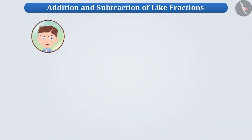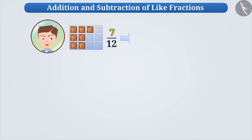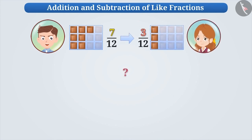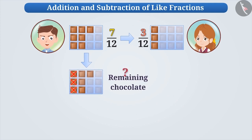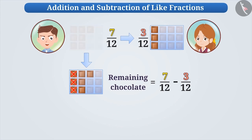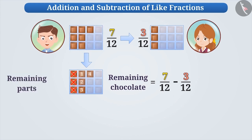Now let us suppose you have seven by twelve parts of a chocolate. If you give three by twelve parts of it to your sister, then what part is left with you? In order to find that, we have to subtract three by twelve from seven by twelve. As you can see, after giving three parts from seven parts, the remaining parts are four. Therefore, the fraction of the remaining parts is four by twelve.